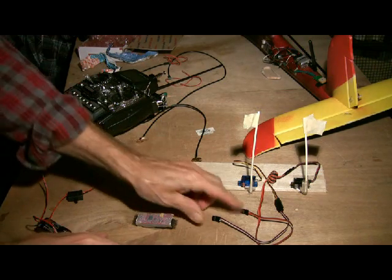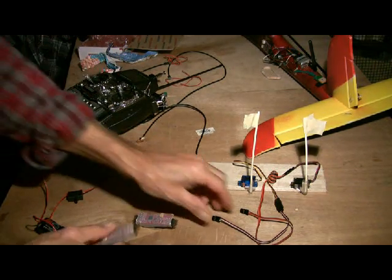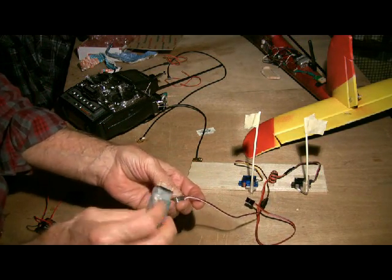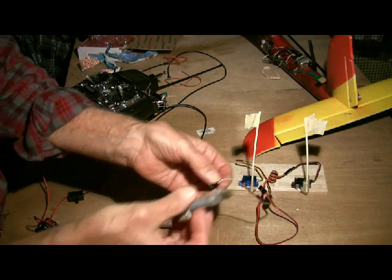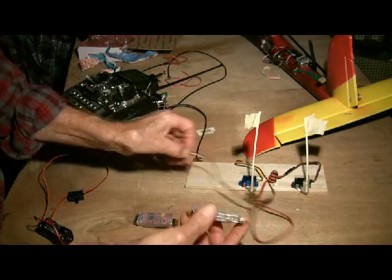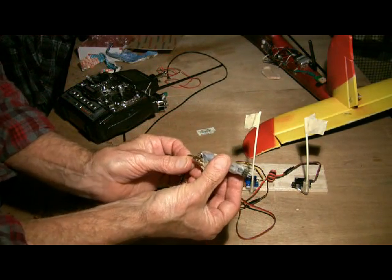Now we need to bind. Turn the transmitter off. We need to bind these, so I'm going to use channels two and four on these receivers. I'm going to call that down where the antenna goes. We don't need the antenna at this close range.